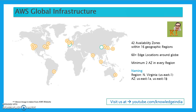In addition to regions and availability zones, there are edge locations around the world — currently 60-plus edge locations, and the number is increasing every month. Edge locations are the points of presence for the AWS CDN service called CloudFront. AWS has a content delivery network service named CloudFront, and the complete list of all edge locations is available on the website and keeps getting updated regularly.